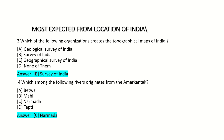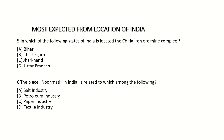Fifth question: In which of the following states of India is the Chiriya Iron Ore Mine complex located? Option A: Bihar. Option B: Chhattisgarh. Option C: Jharkhand. Option D: Uttar Pradesh. Answer: Option C — Jharkhand.